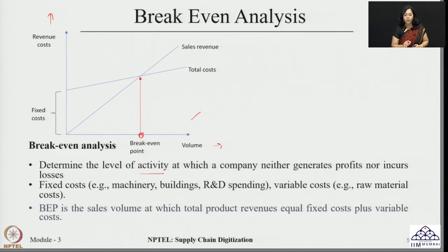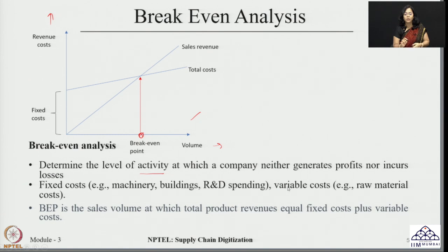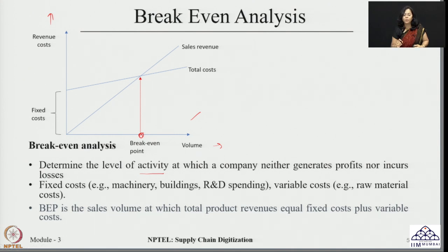In order to get the break-even point, we consider two types of cost. The first is fixed cost, which includes all installations such as machinery cost, building cost, spending on R&D, and so on — generally one-time costs and the basic requirement for establishing the system. The second is variable cost, which refers to costs that keep changing depending on the volume of products, such as raw material cost.